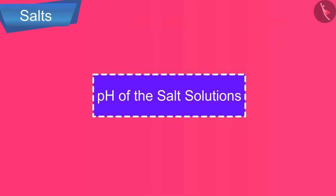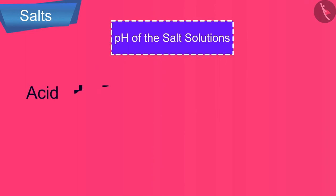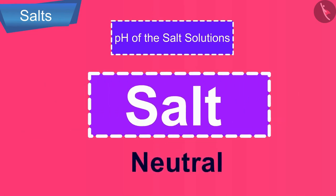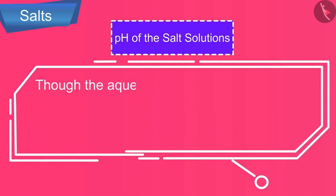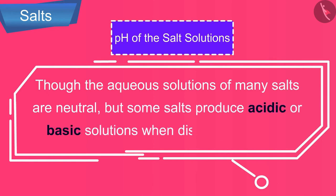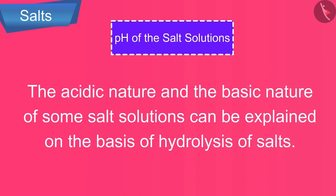We will now discuss the pH of salt solutions. A salt is formed by the reaction of an acid and a base, so we might expect the salt to be neutral in nature. Though the aqueous solutions of many salts are neutral, some salts produce acidic or basic solutions when dissolved in water. The acidic or basic nature of some salt solutions can be explained on the basis of hydrolysis of salts.